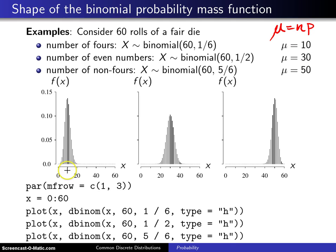Notice that from our means, this first one is centered about 10 when we're counting the number of 4s in 60 trials. This one in the middle is centered around 30 when we're counting the number of even numbers in 60 trials, and this one is centered around 50 when you're counting the number of non-4s.